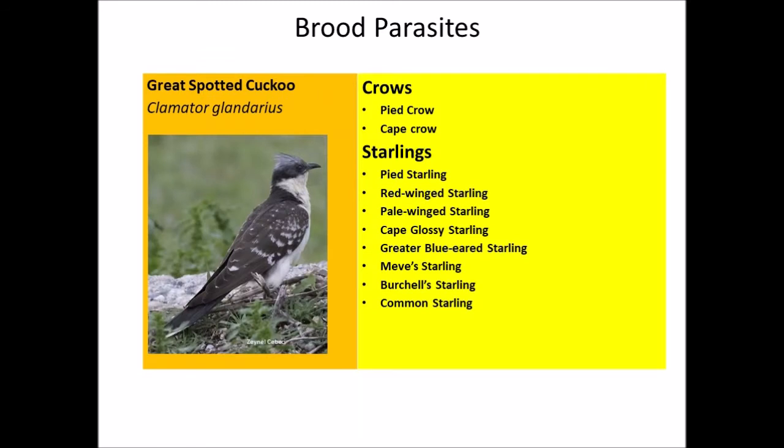The Great Spotted Cuckoo, Clamator glandarius, has two main groups of host birds: crows — the pied crow and cape crow — and a range of starlings, predominantly glossy starlings. These include the pied starling, red-winged and pale-winged starlings, cape glossy starling, greater blue-eared starling, meve's or long-tailed starling, wattled starling, and common starling.